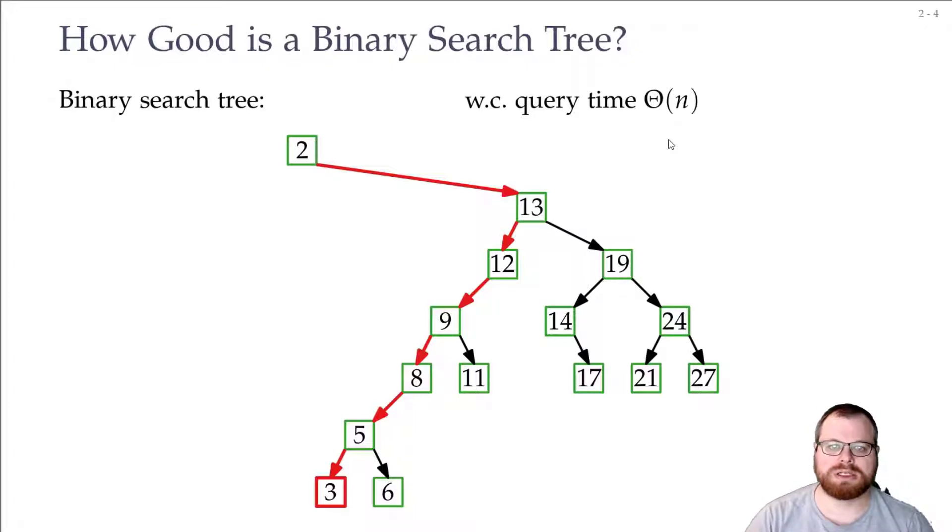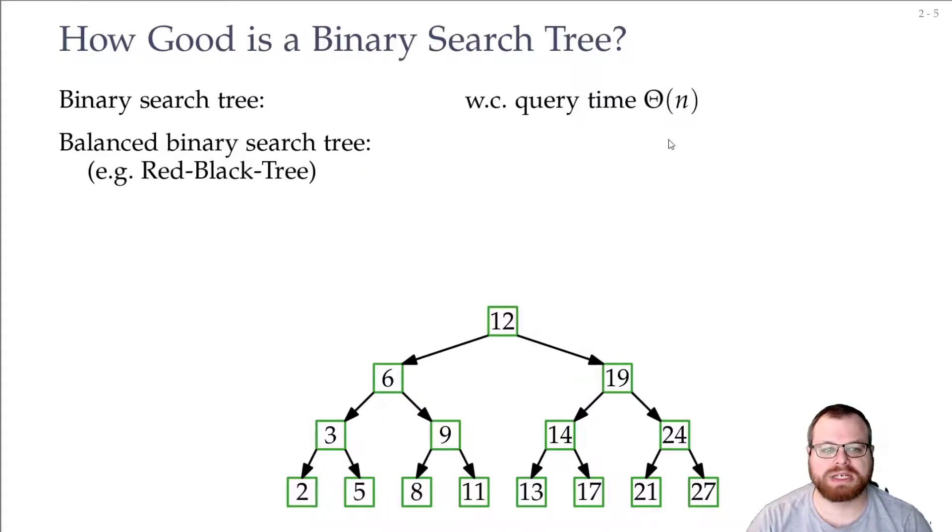But as you know, there are self-balancing binary search trees, for example the red-black tree, and if I use that one and now I look for the three, then the longest path I can have to the number only has logarithmic length.